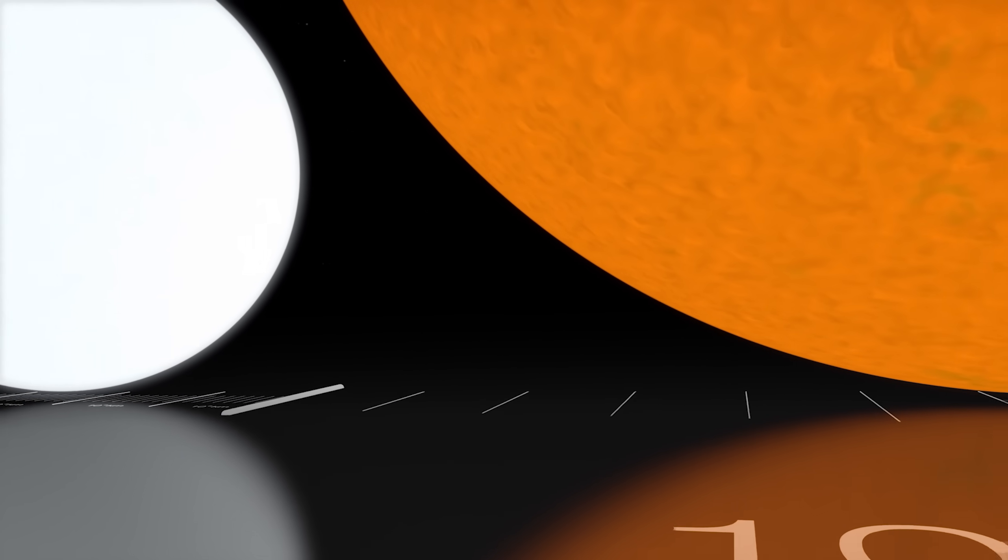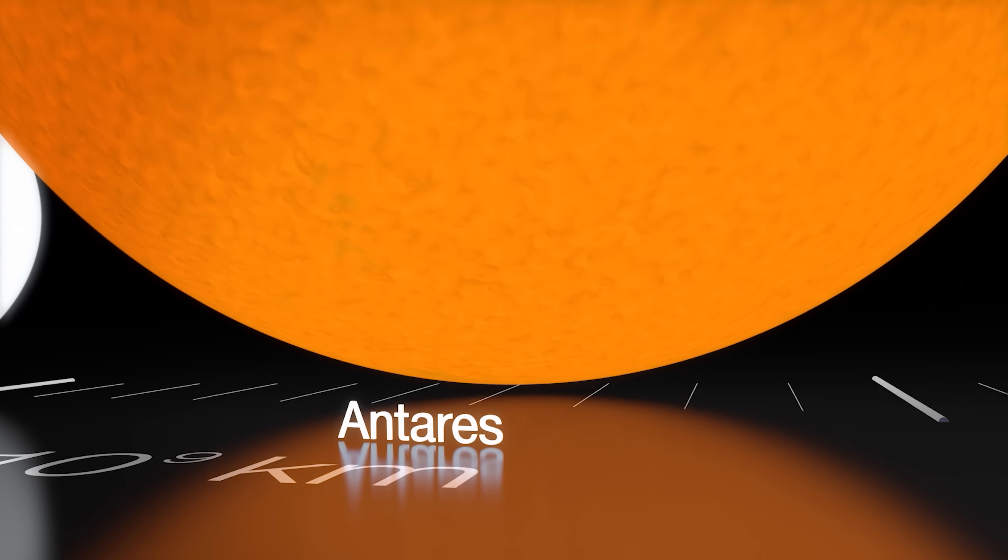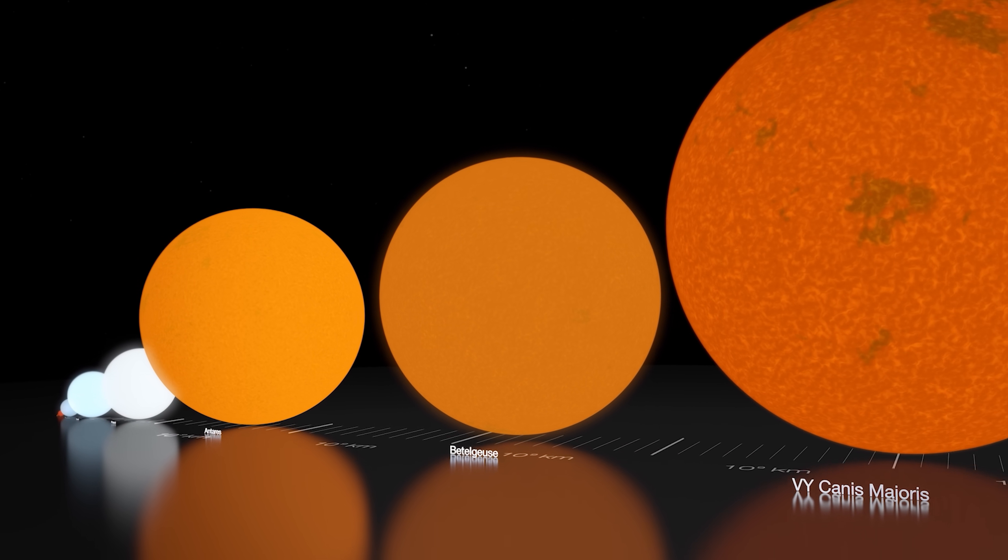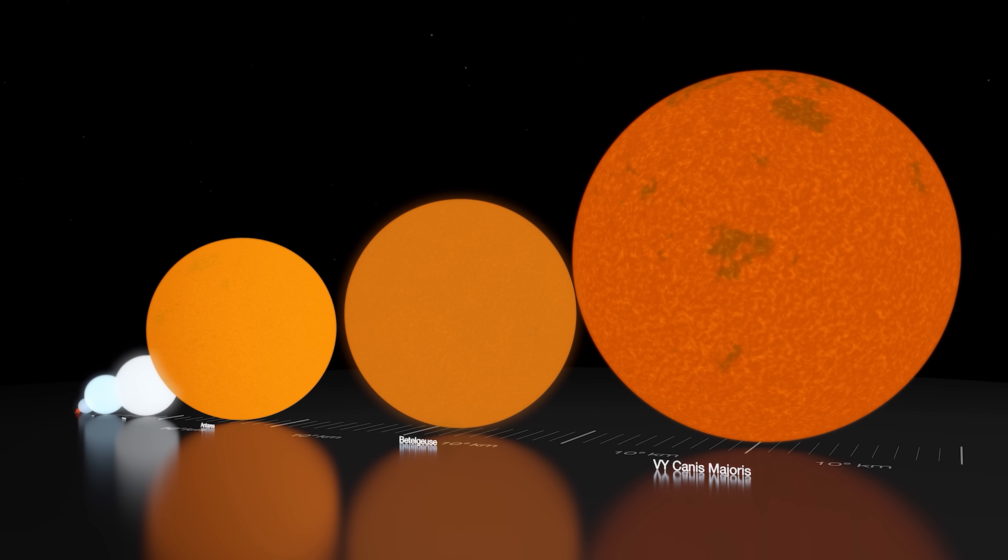Larger again are yellow supergiants, and then red supergiants. While not as massive or as luminous as blue supergiants, red supergiants are the biggest stars in existence.